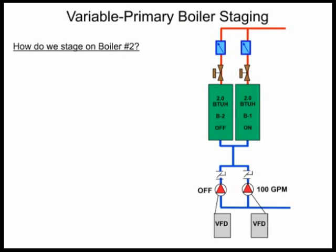So we've added our isolation valves and our automatic flow limiters. How are we going to stage these boilers in variable primary? Remember we talked about staging in constant flow primary, variable flow secondary — well, how do we stage in variable primary? It's different. The system is a little bit more complicated.